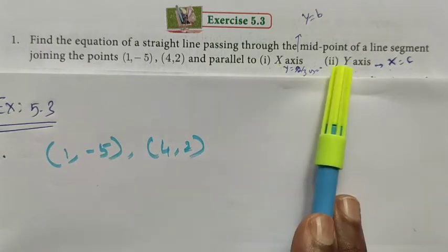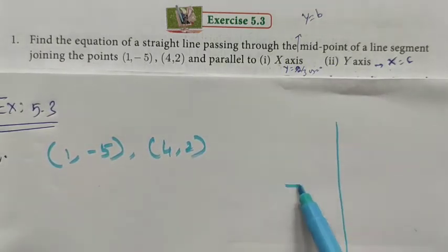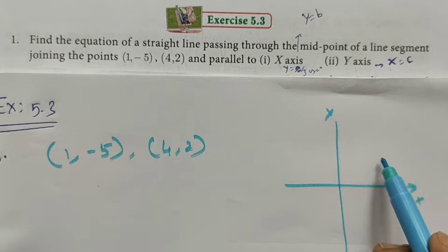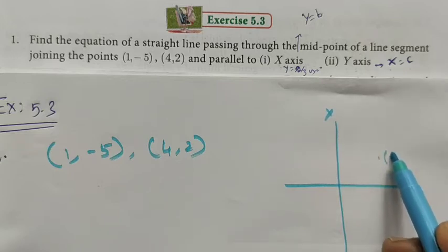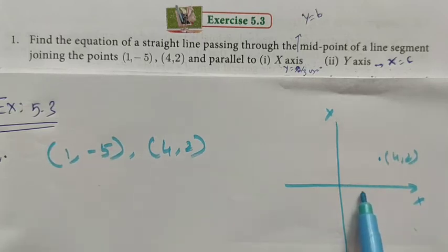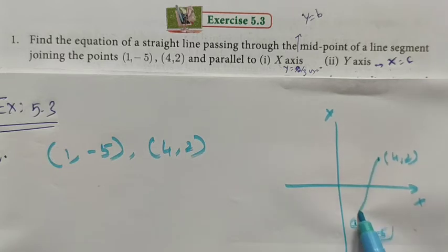These are the given points. We draw a rough graph here. Both coordinates positive means the point (4, 2) lies in the first quadrant. x-value 1, y-value minus 5 means the point (1, -5) lies here. This is the straight line segment between the two points.